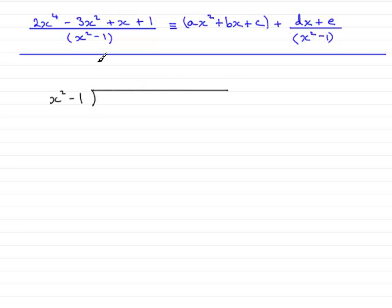So what I'm going to do is set this up as x squared minus 1 into, now you've got to be careful here because we've got 2x to the power 4 but we have no x cubed term. So I'm going to write plus 0x cubed. Then we've got minus 3x squared and then plus x plus 1.